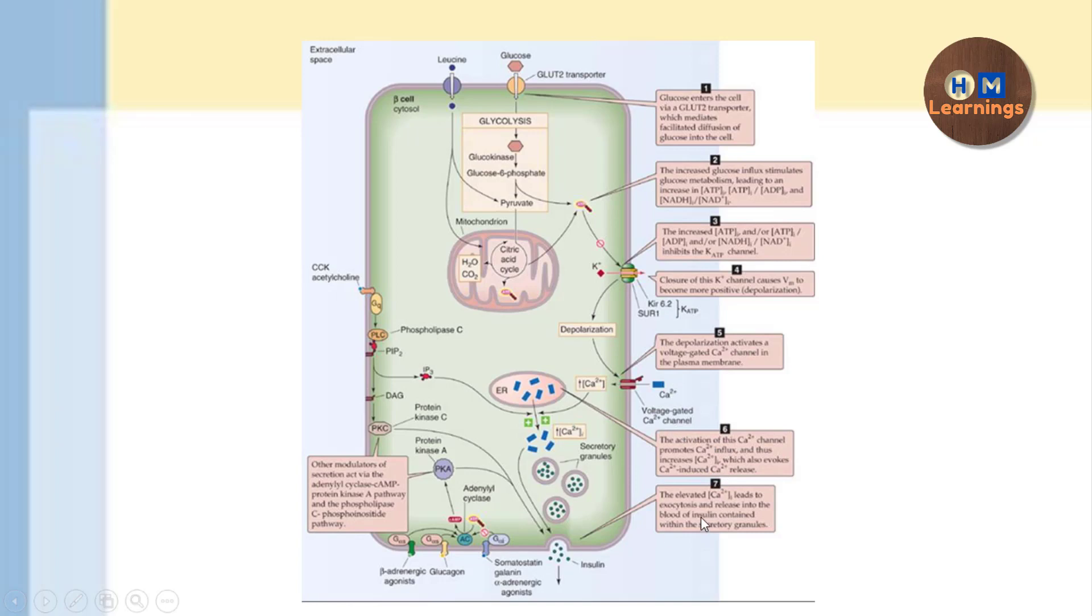There will be depolarization which will activate the voltage-sensitive calcium channel and hence there will be influx of the calcium channels, which are leading to the release of this, you can see the exocytosis of this secretory granules. Apart from this, this diagram also has shown that how the beta-adrenergic stimulation is going to increase the insulin secretion and that is by the help of the adenylyl cyclase.